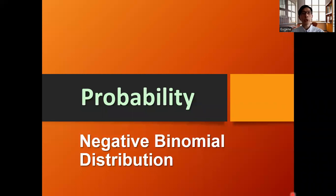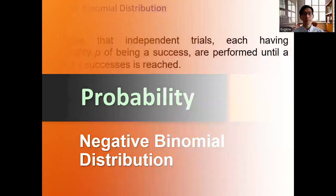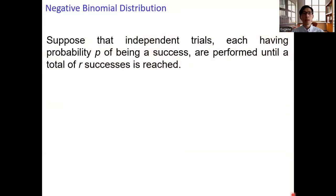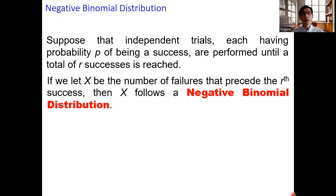Hello everyone. In this video, we will talk about the negative binomial distribution. Suppose that independent trials, each having probability p of being a success, are performed until a total of r successes is reached. If we let x be the number of failures that precede the r-th success, then the random variable x follows a negative binomial distribution.